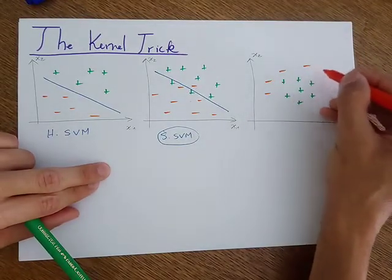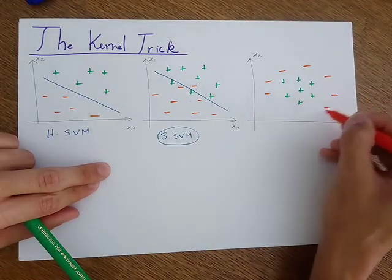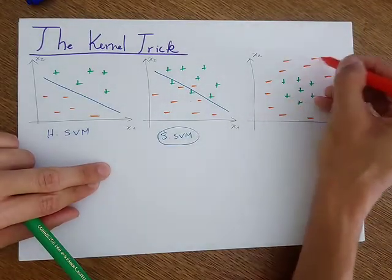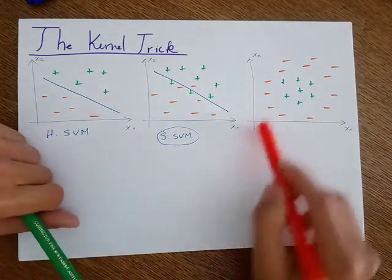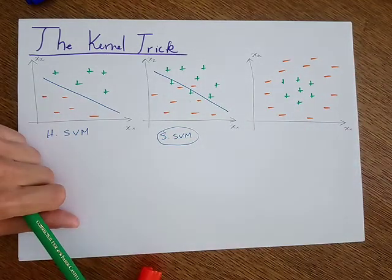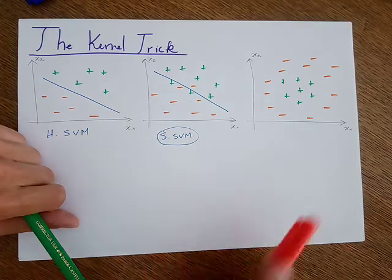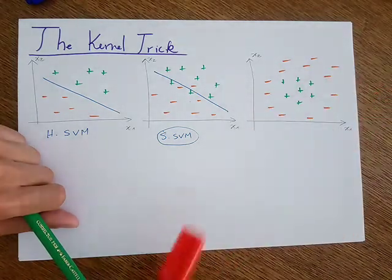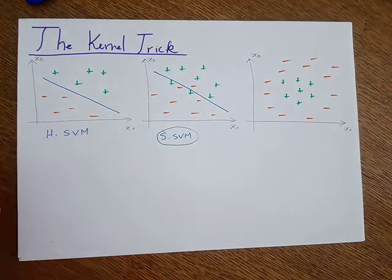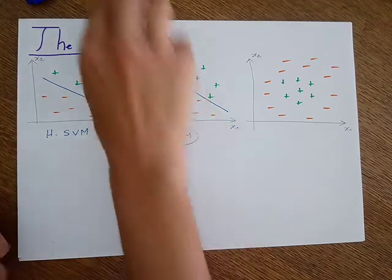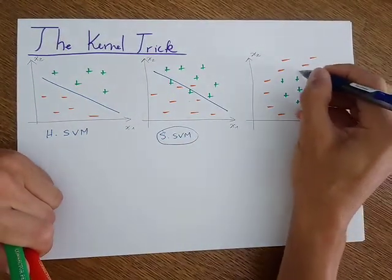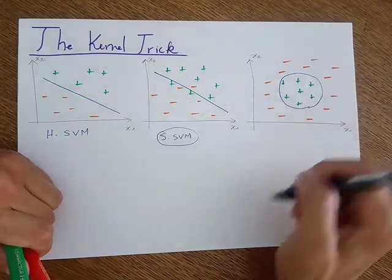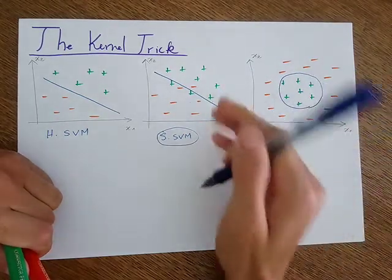What if I have a distribution like this? In that case, there is no line that would give me a good separation between these training samples. In fact, we need to find another model instead of a line. For example, a circular model would do better than a linear model.